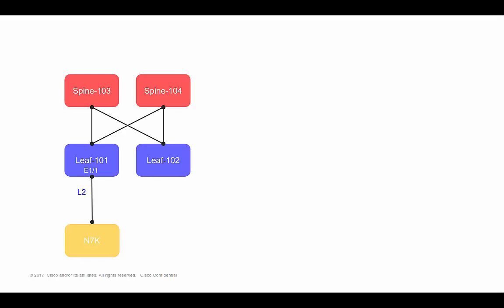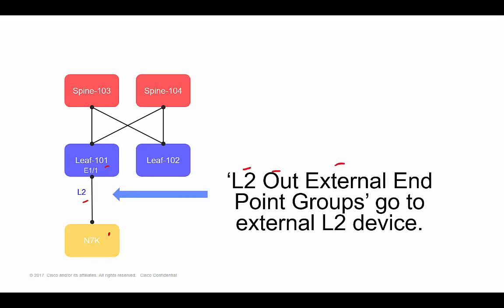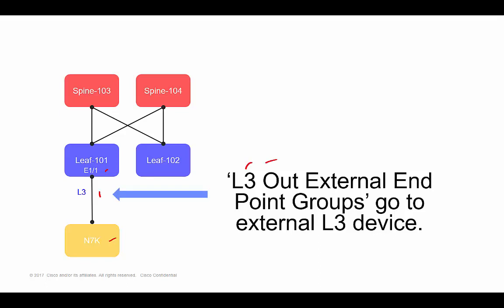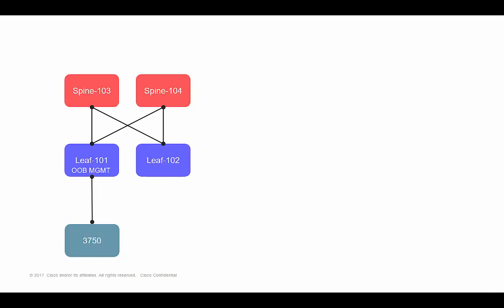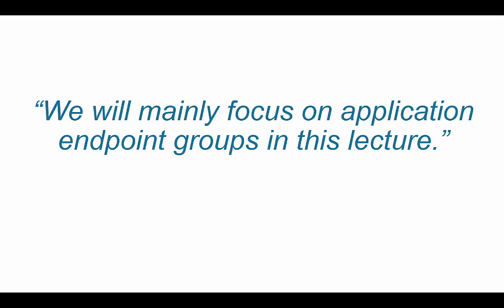There are other types as well. LEAF-101 may have a Layer 2 connection going to an external traditional switch — this is called a Layer 2 Out external endpoint group. If instead there's a Layer 3 link between the leaf and a 7K, this is referred to as an L3 Out external endpoint group. The last type is the management endpoint group — if the APIC management interface goes to a 3750, traffic coming into that management interface is placed into a management endpoint group. In this lecture, we'll focus on application endpoint groups for bare-metal servers and virtual machines.